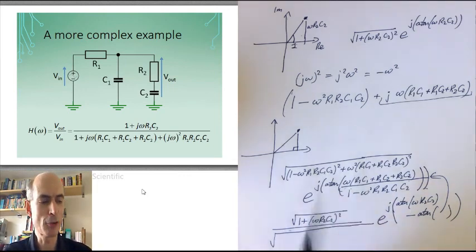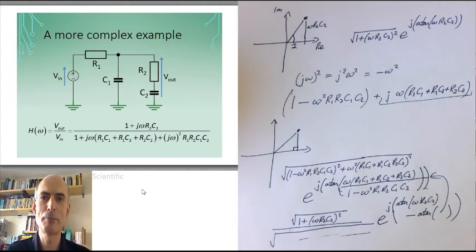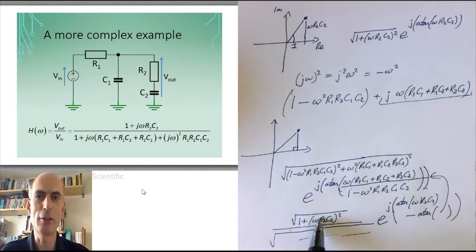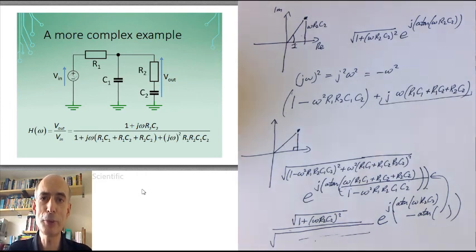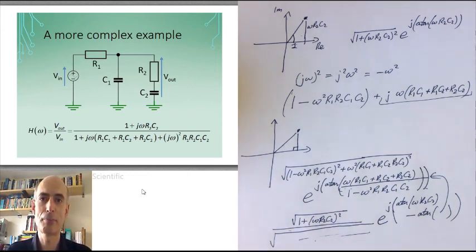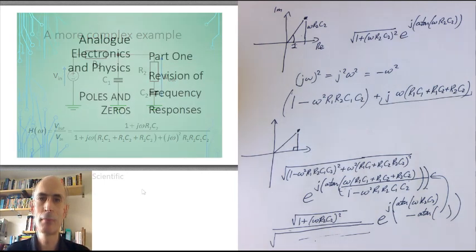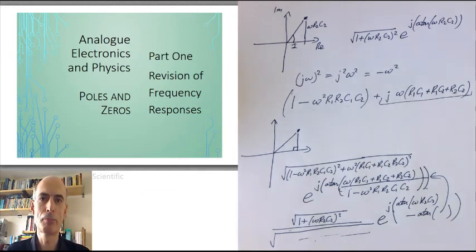We're going to get a very complicated expression for the amplitude response and a very complicated expression for the phase response, and this is for a comparatively simple circuit. We really desperately need a simpler way to describe the amplitude and phase responses of these circuits, and that's exactly what poles and zeros allow us to do. Next time we'll take another look at this example and extract a common form that we can use to develop a general approach for all circuits.